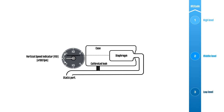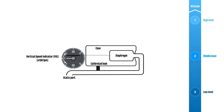The VSI consists of a flexible diaphragm which expands or shrinks like a balloon when the static pressure changes. The static pressure is fed to the diaphragm by the static port and a mechanical link drives the pointer to display the rate of climb or descent to the pilot.